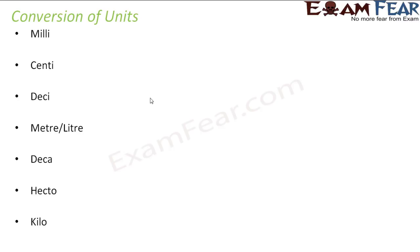If you are talking about volume, something in liters, then it becomes milliliter, centiliter, deciliter, liter, decaliter, hectolitre, and kiloliters. The relationship is such that as you move down from above to below, you are actually moving towards bigger units. So a kilometer is always a bigger unit than a millimeter.